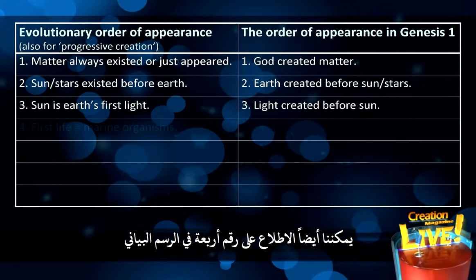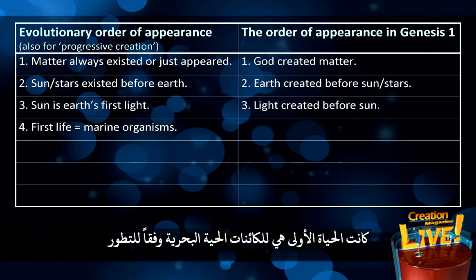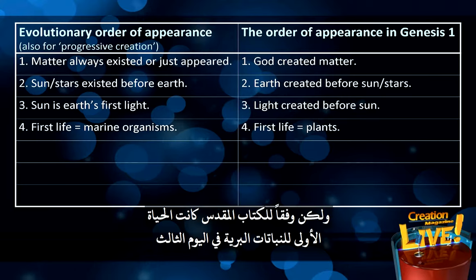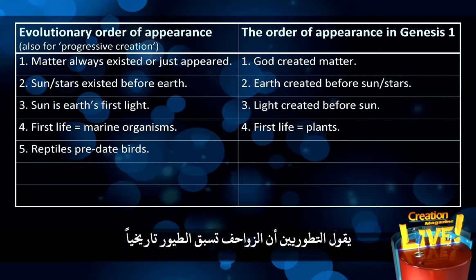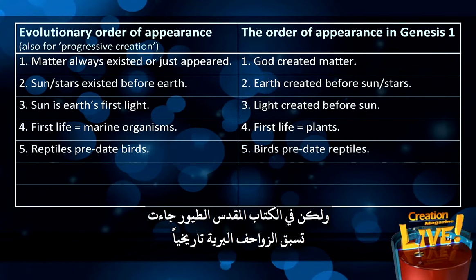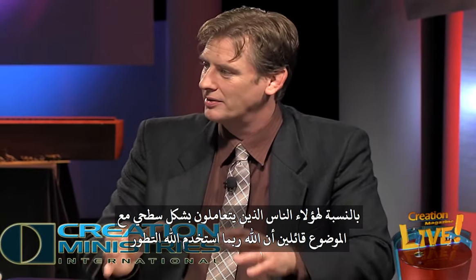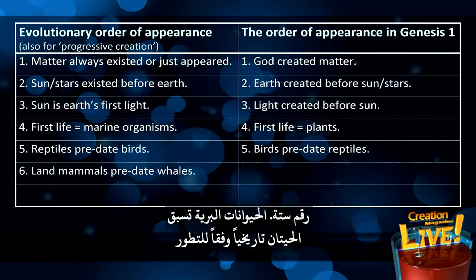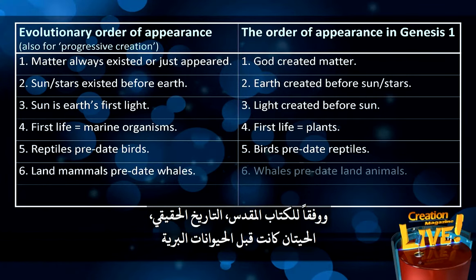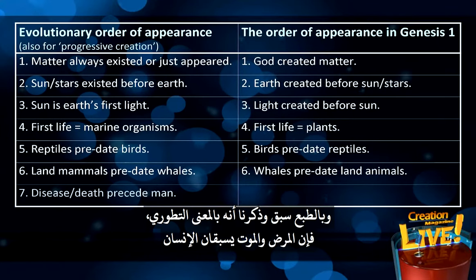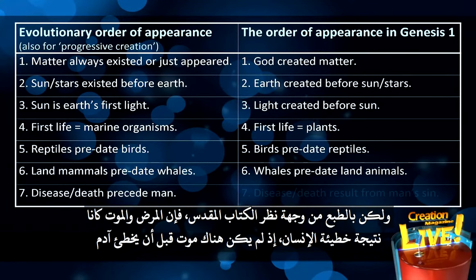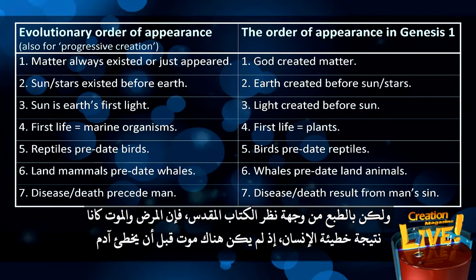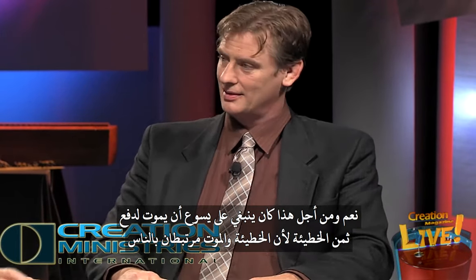According to evolution, first life is marine organisms; according to the Bible, first life is land plants on day three. Evolutionists say reptiles predate birds, but in the Bible birds predate land reptiles. For those trying to blend these two — it doesn't fit at the detail level. Evolution says land animals predate whales; the Bible says whales predate land animals — another contradiction. And in the evolutionary sense, disease and death precede man; but in the biblical view, disease and death result from man's sin — there was no death before Adam sinned. That's why Jesus had to die to pay for sin, because sin and death are linked.